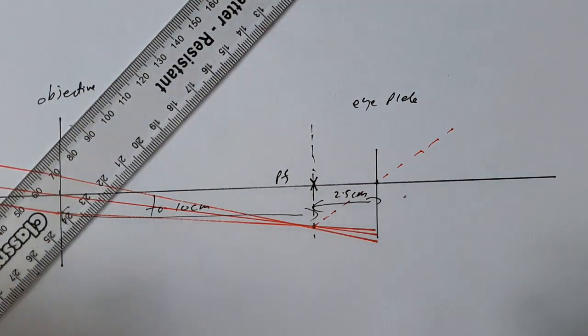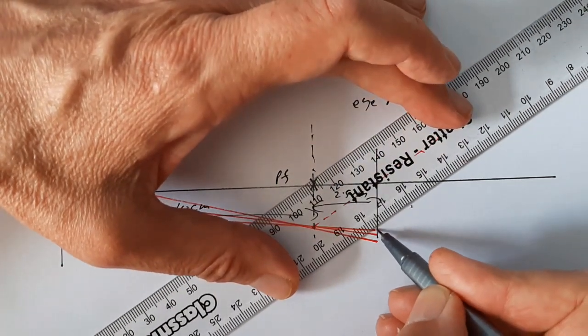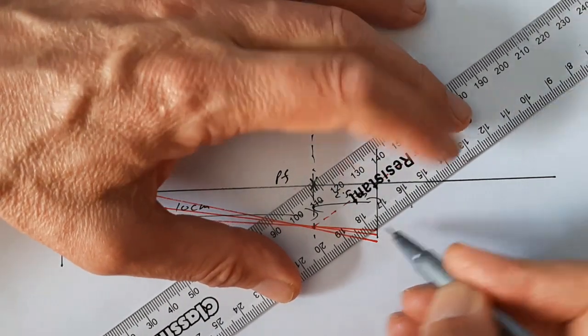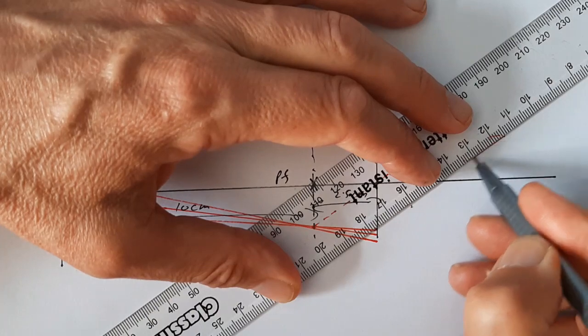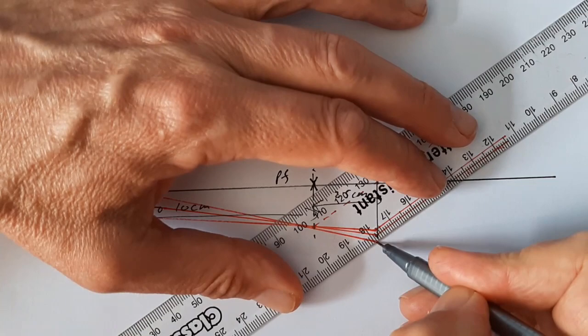And because all rays coming from that line will be parallel, all three of my rays I've drawn in will emerge parallel to that construction ray.